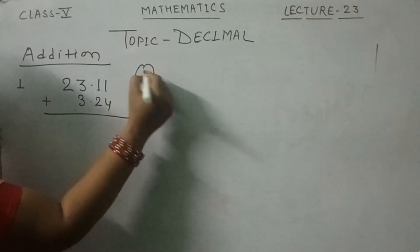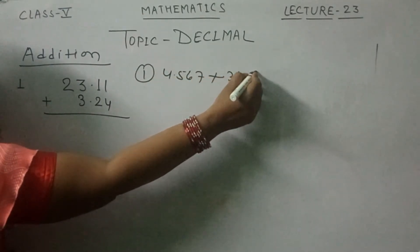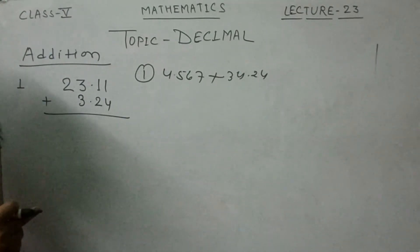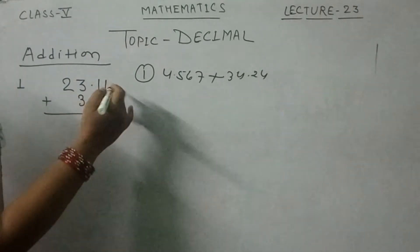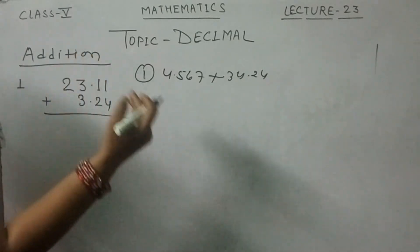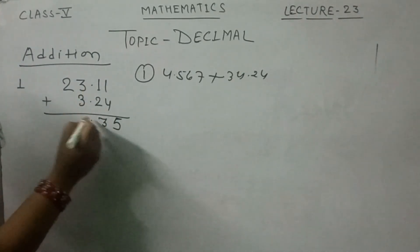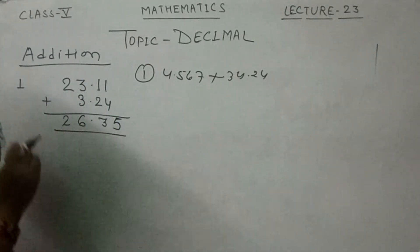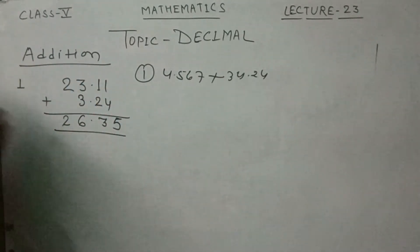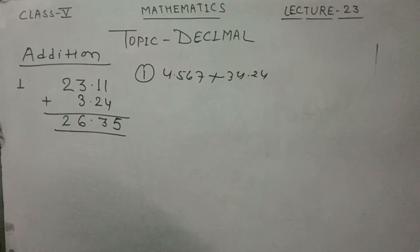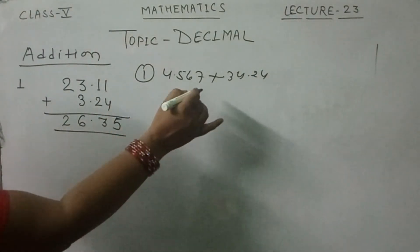But suppose a question is given like this: 4.567 plus 34.24 — the numbers are not arranged. You have to arrange them. Write down the numbers one under the other with the decimal points lined up. 4.567 is the first number and 34.24 is the second. Here 4.567 has only ones place before the decimal, while 34.24 has ones and tens. Align ones under ones, tens under tens.